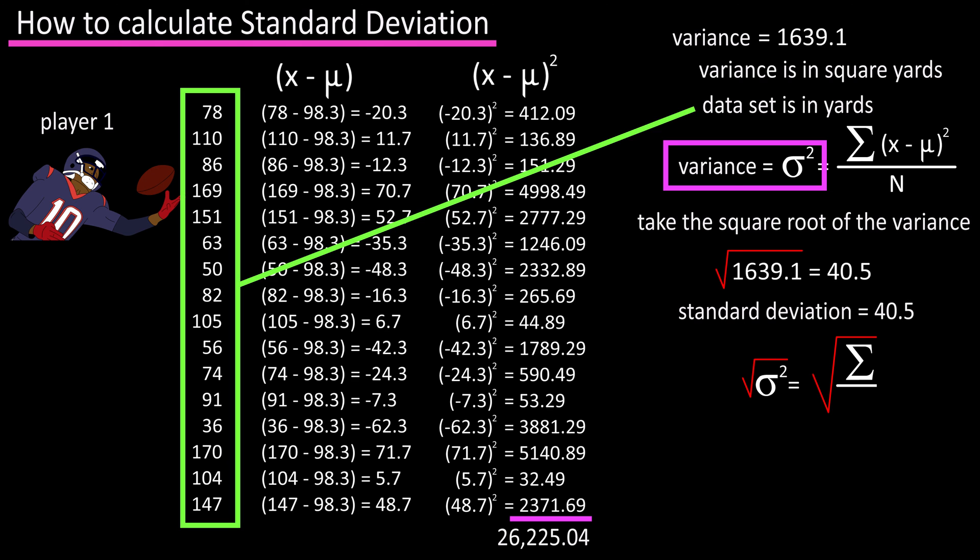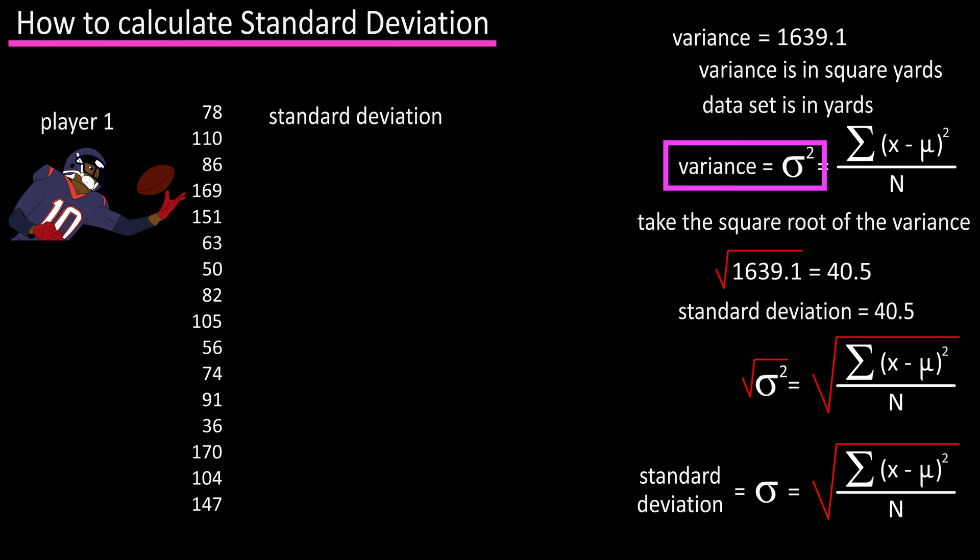The formula for this is the same formula as the variance just putting a square root on both sides, so now it's small sigma equals the square root of the sum of x minus mu squared divided by big n. The standard deviation is powerful in that it gives us a measure of variation of the data set about the mean using the same units of measure as the data set.